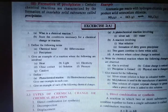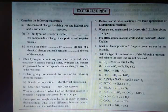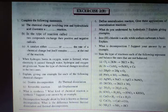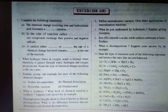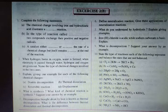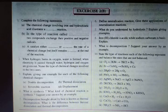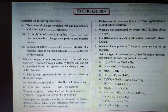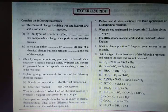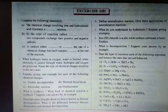Moving on to Exercise 2B. Fill in the blanks: The chemical change involving iron and hydrochloric acid illustrates a displacement reaction. In the type of reaction where two compounds exchange positive and negative radicals, it is called a double displacement reaction. A catalyst either accelerates or decelerates the rate of a chemical change, but itself remains unchanged at the end of the reaction.